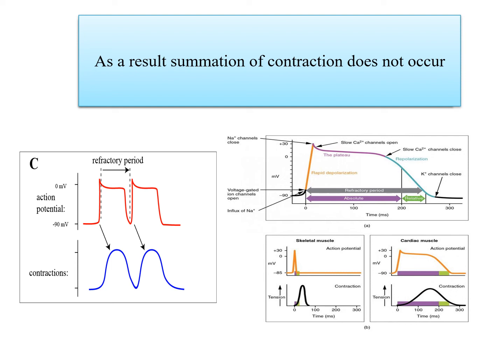If the heart shows tetanic contraction, that is, continued contraction without any relaxation, no blood will be pumped out into the circulation. Circulation will stop and it will result in death. So this explains why cardiac muscle is not tetanized.